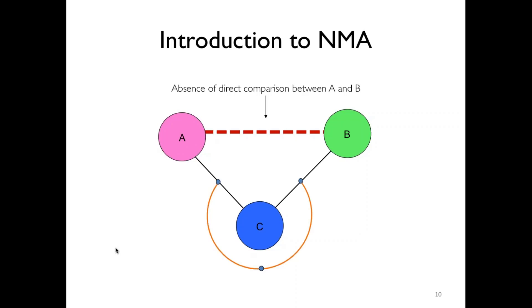Here we have an example. We may wish to choose between two pharmacological interventions for smoking cessation: bupropion and nicotine replacement therapy. Ideally, we will have a direct head-to-head comparison between the two treatments. This may not always be available, but both bupropion and nicotine replacement therapy have been compared to placebo.